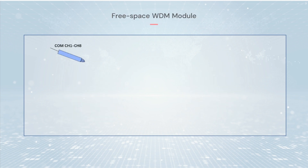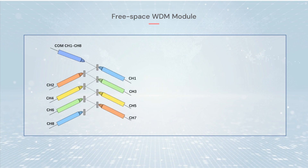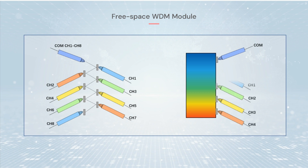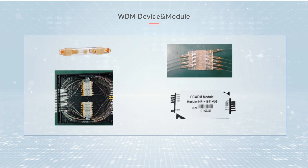Compact WDM modules are developed for some special applications, including CDWDM and CCWDM. The coupling between the wavelength channels is achieved in the form of zigzag lines of light.